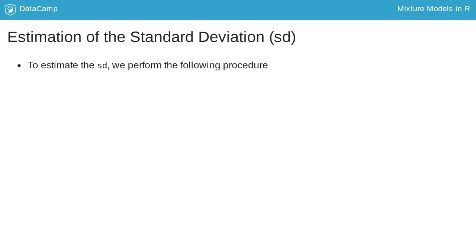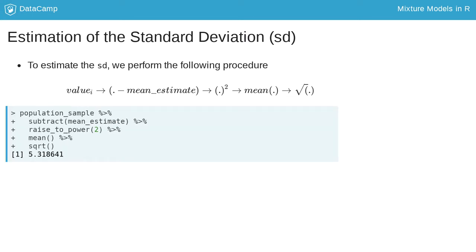To estimate the standard deviation, we start by subtracting the estimated mean from each observation, then we square these quantities and take the mean. Finally, we square root this quantity. Here, I show you how to calculate the standard deviation manually, but for the purpose of this course, we can just use the sd function.